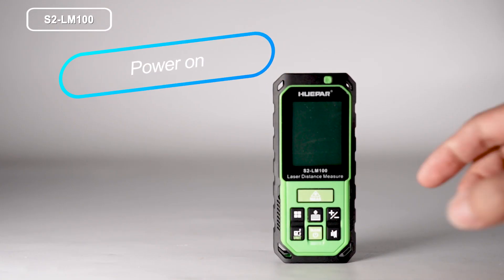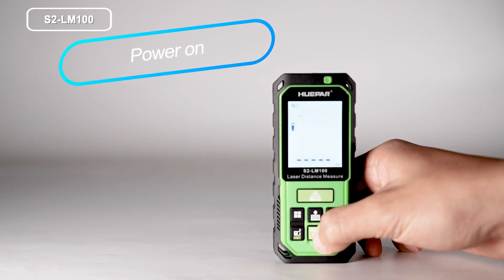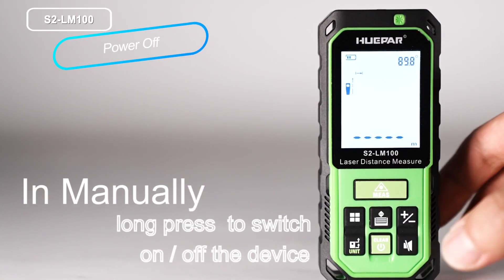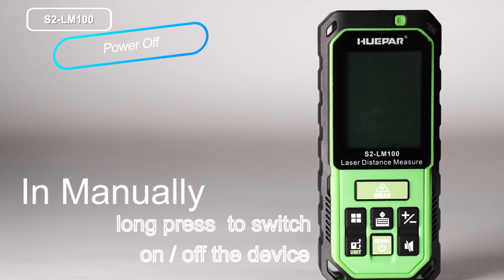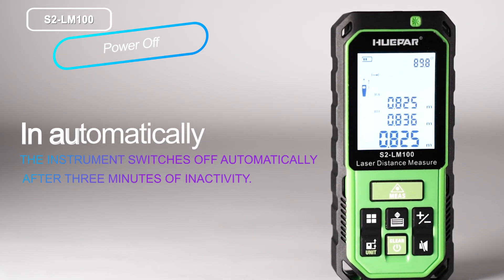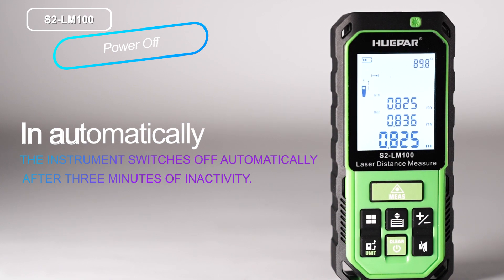Power. Power on: long press to switch on the device. Power off: manually long press the button to switch on or off the device. Automatically, the instrument switches off after 3 minutes of inactivity.